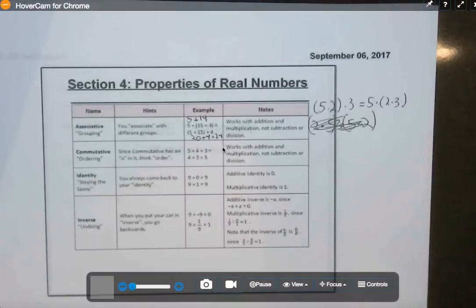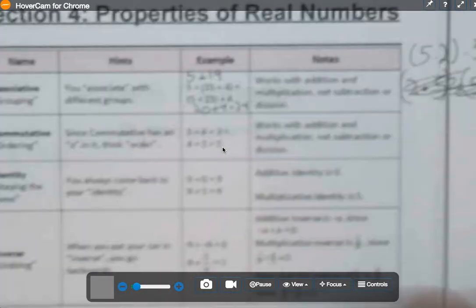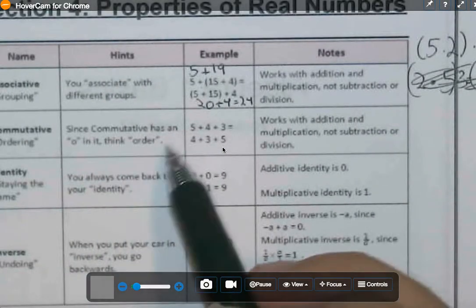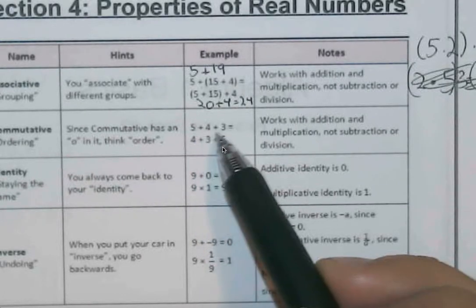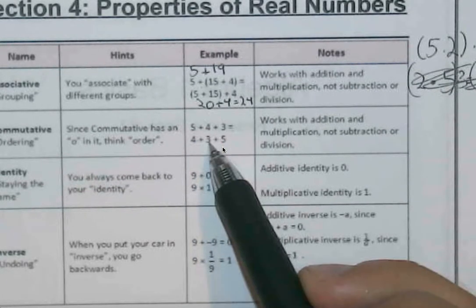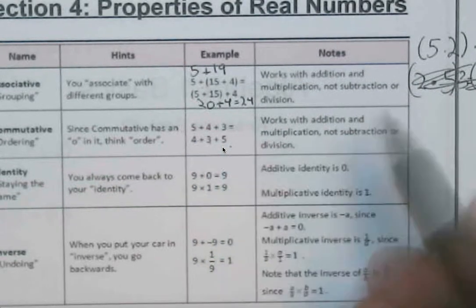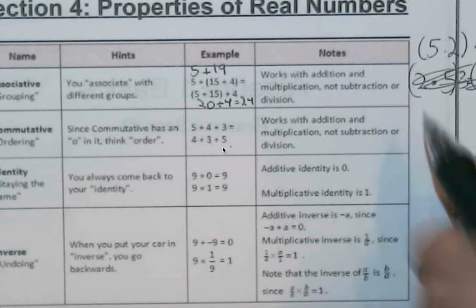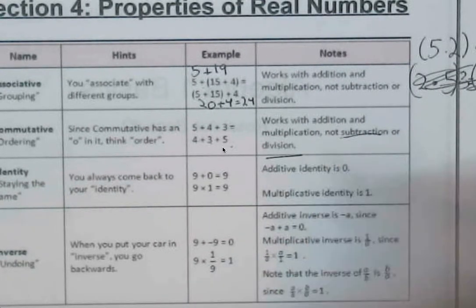So with the commutative property, this considers working with how the numbers are laid out. So this has 5 plus 4 plus 3 is equal to 4 plus 3 plus 5. And this works with addition and multiplication, but not quite subtraction or division. So that's crucial.